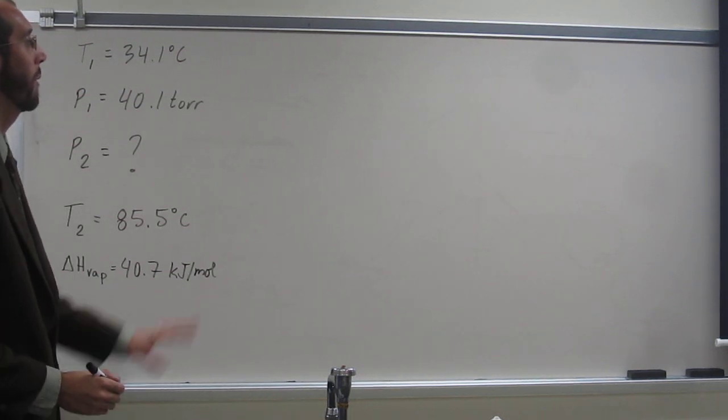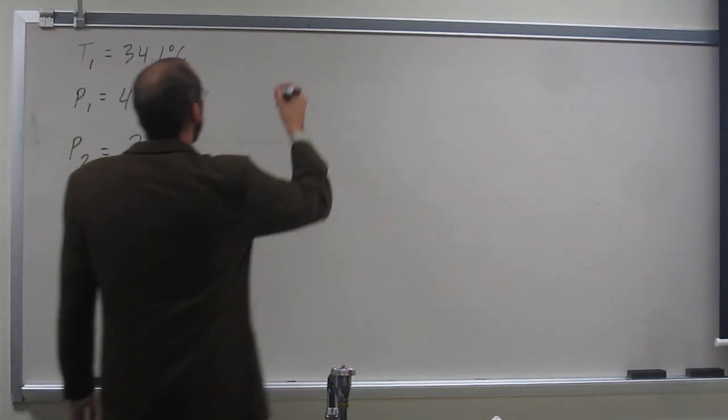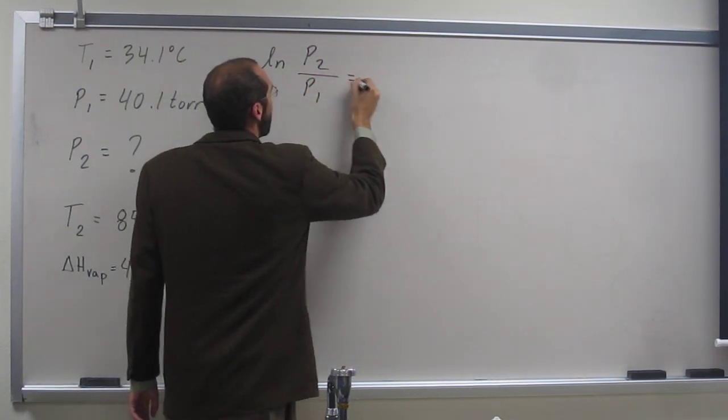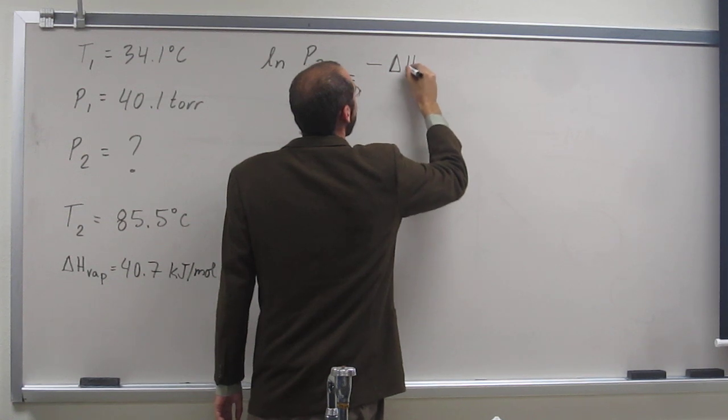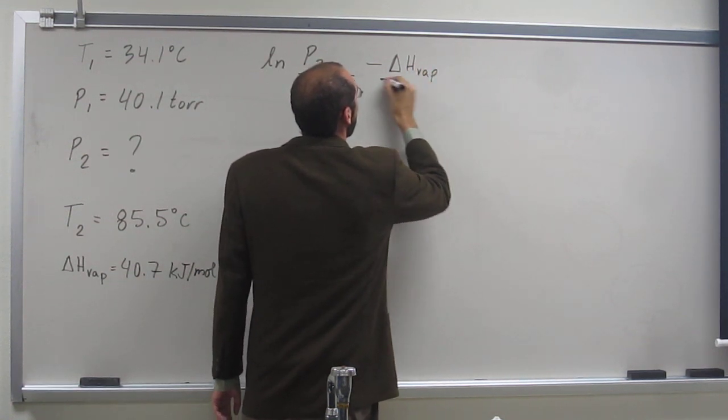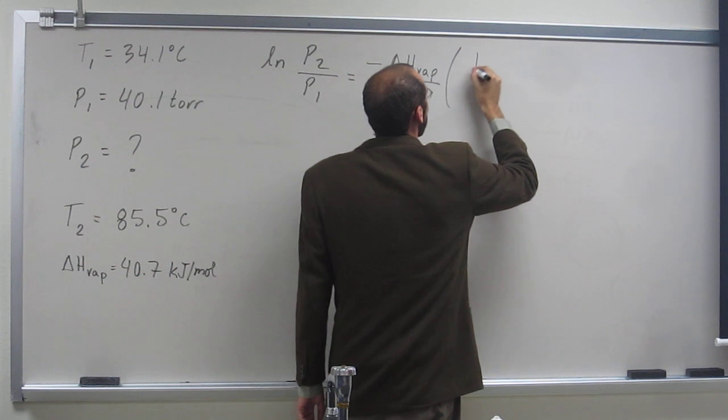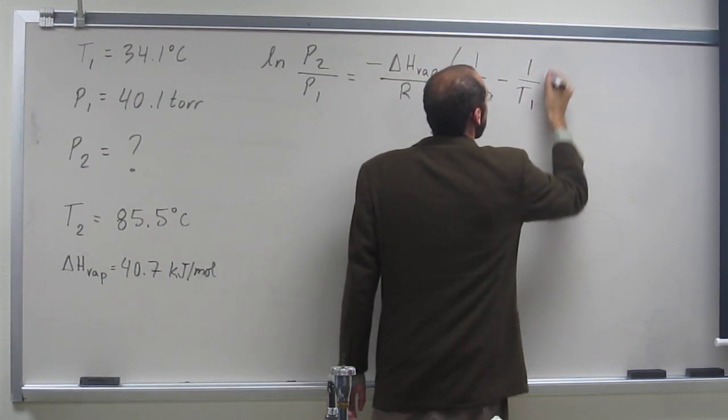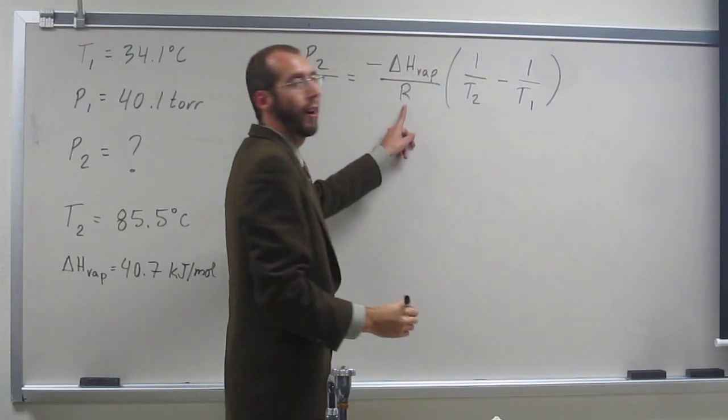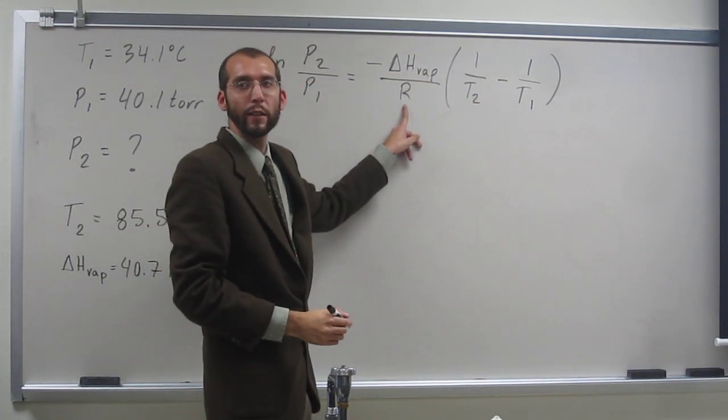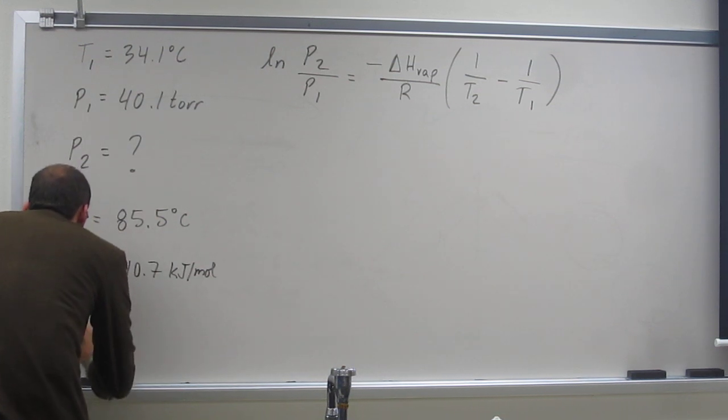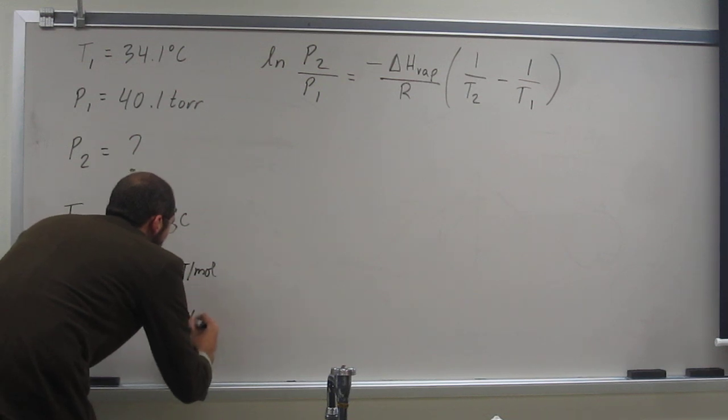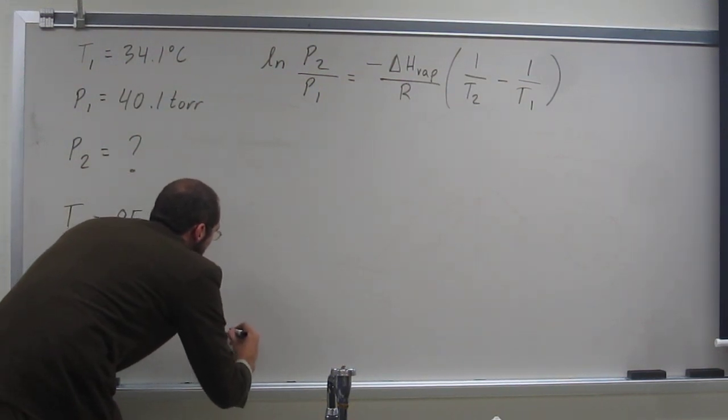The other thing you have to remember, of course, the equation, which is Ln P2 over P1 equals negative delta H-vap over R times 1 divided by T2 minus 1 divided by T1. Okay, this R here is the ideal gas constant, 8.314 joules per mole Kelvin.